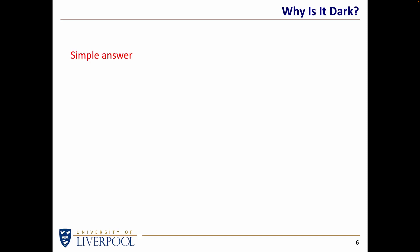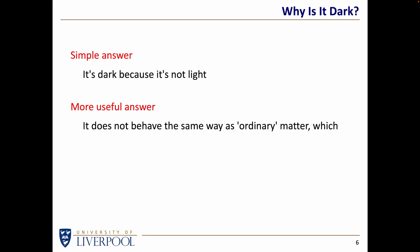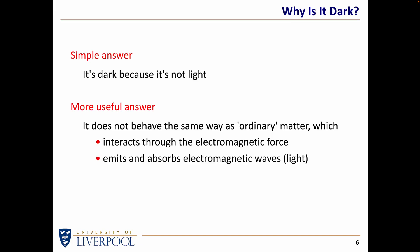So firstly, why is it dark? The simple answer is because it's not light, but that's a little bit fatuous. A more useful answer is it does not behave the same way as ordinary matter — the sort of matter that makes up you and me and everything else we can see. Because normal matter interacts through what we call the electromagnetic force — it emits and absorbs electromagnetic radiation, what we would normally call light. Whether we're talking about visible light, ultraviolet, infrared, or radio, ordinary matter does emit and absorb electromagnetic waves, and hence can be detected through its interaction with light.